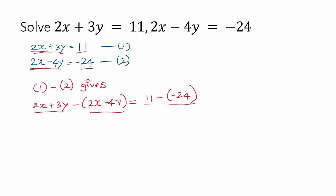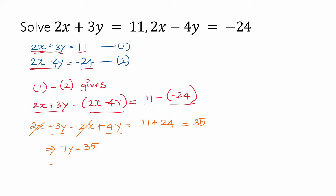Let us simplify. If you simplify: 2x plus 3y minus 2x, and minus of minus 4 is plus 4y, equals 11, and minus of minus becomes plus, so plus 24, which is 35. So 2x and 2x cancel, and 4y plus 3y equals 7y, which means 7y equals 35.